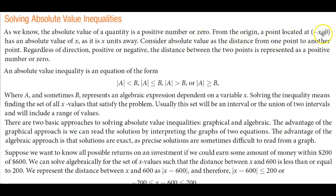From the origin, a point located at (-x, 0) has an absolute value of x as it is x units away. Consider absolute value as the distance from one point to another point. Regardless of direction, positive or negative, the distance between two points is represented as a positive number or zero.